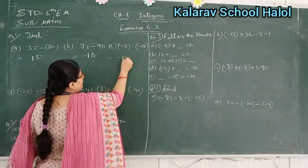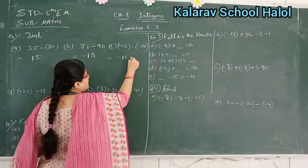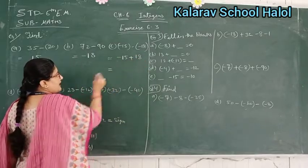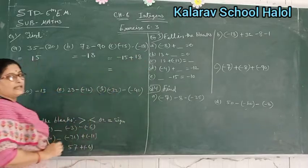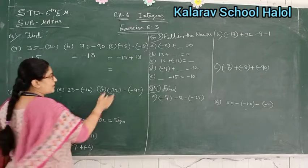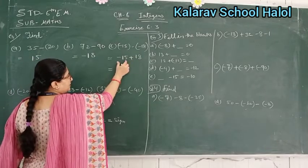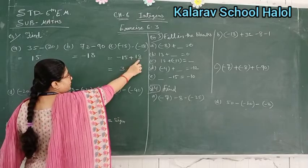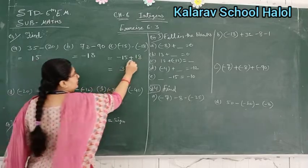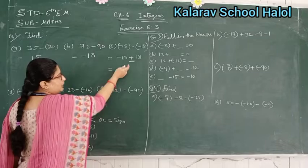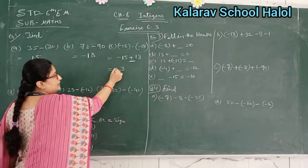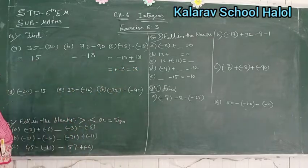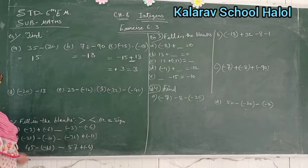Then minus 15, minus minus gives plus 18. Now opposite signs, so subtraction will happen: 18 minus 15 is 3. But the sign of the bigger number is what we apply — here it is plus. So we don't write plus, we just write 3.